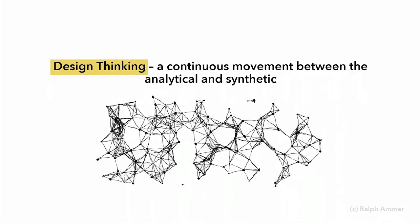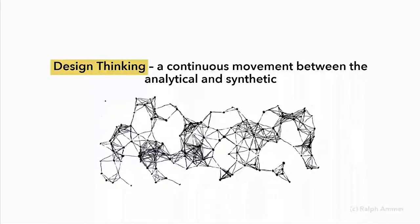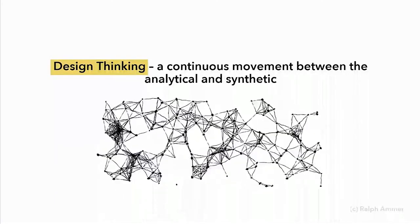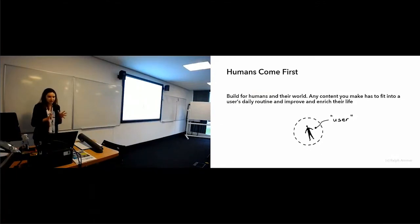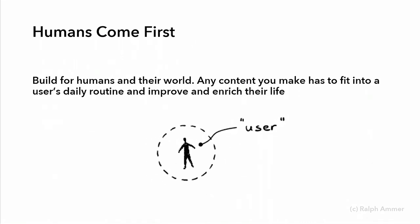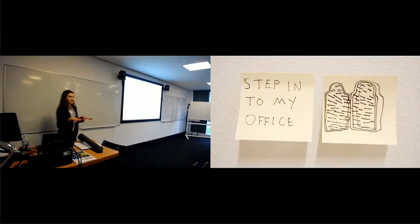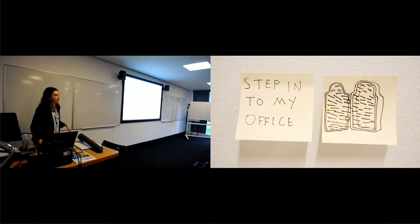We will start working with the design thinking method — the classical HCI method we will work during the tutorial. Design thinking is the continuous jump, a loop between analysis and synthesis. You create something and then analyze it — you create your prototype and then analyze it with the user. In design thinking, humans always come first because we build for them. Anything you make has to fit their agenda, their everyday life, and it's about stepping into their shoes and understanding their everyday experiences.